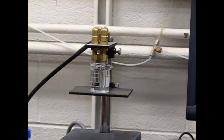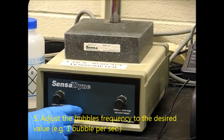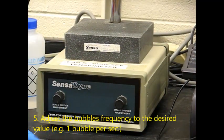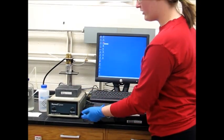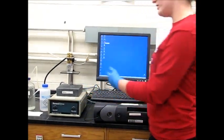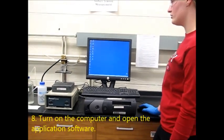We're going to adjust these two knobs for the smaller radius and larger radius until they're both flowing at one bubble per second. Now that we've adjusted both probes to flow at one bubble per second, we're going to turn on the computer and open the tensometer software.